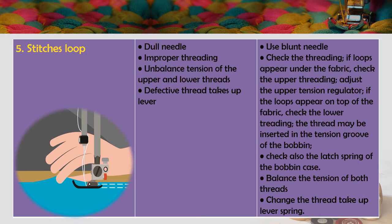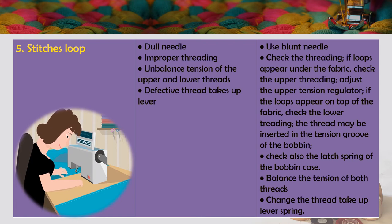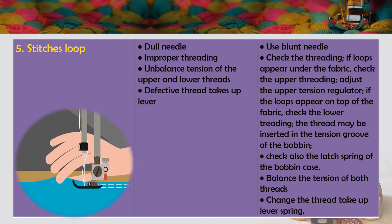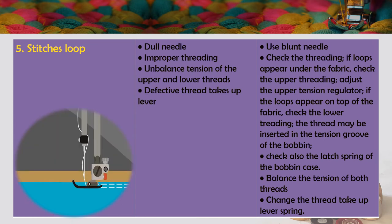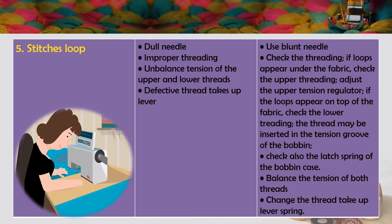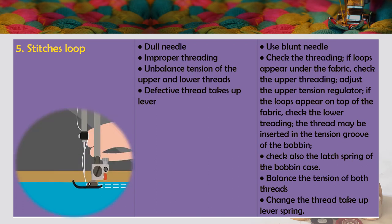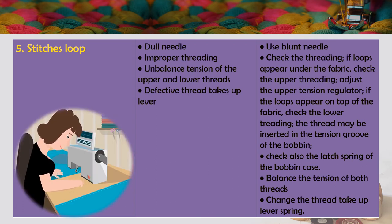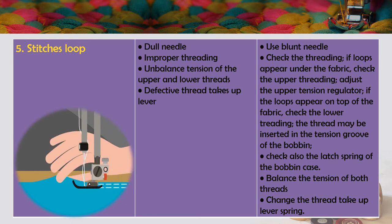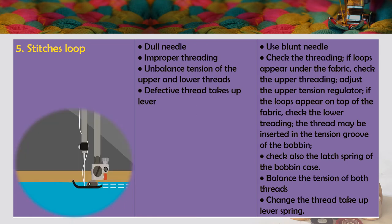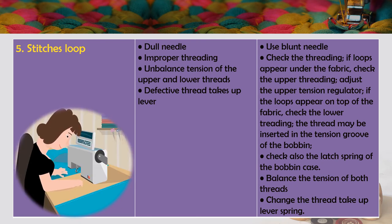The fifth trouble is stitches loop. Causes: dull needle, improper threading, imbalanced tension of upper and lower threads, and defective thread take-up lever. Remedies: use a sharp needle, check the threading. If loops appear under the fabric, check upper threading and adjust the upper tension regulator. If loops appear on top of the fabric, check lower threading — the thread may not be inserted in the tension groove of the bobbin. Check the latch spring of the bobbin case, balance the tension of both threads, and change the thread take-up lever spring.